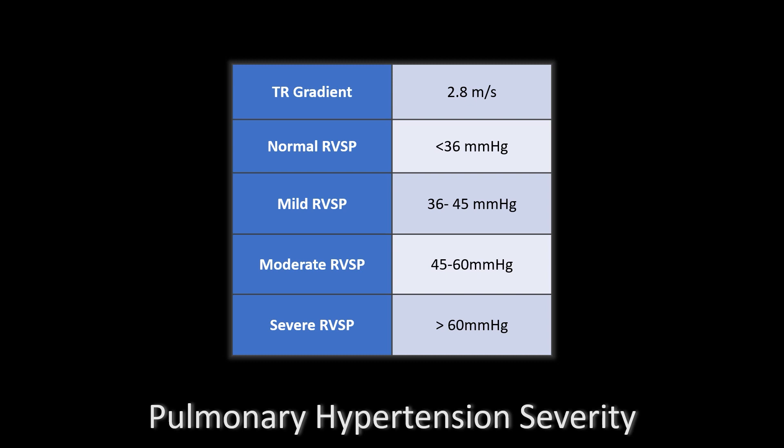Normal values are usually defined as a peak TR gradient of less than or equal to 2.8 meters per second. TR peak velocities of more than 2.8 meters per second correspond to a systolic pulmonary artery pressure of about 36 millimeters of mercury, assuming the right atrial pressure is between 2 to 5. Mild elevation of the right ventricular systolic pressure is 36 to 45, moderate is 45 to 60, and severe is more than 60 millimeters of mercury.